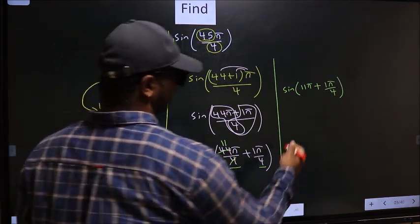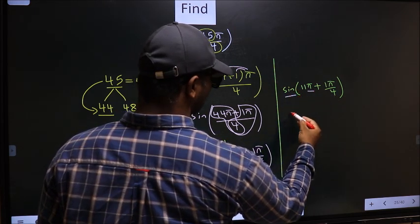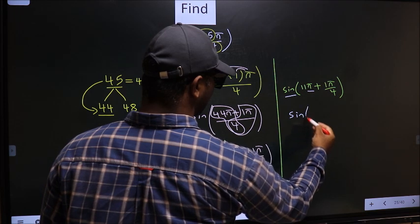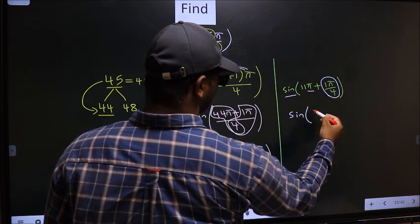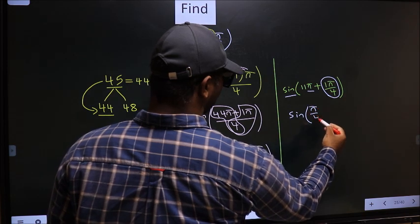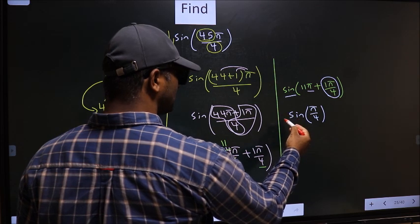Next, here we have π. So, sin is not going to change. It will remain sin. And inside, we get this angle: π/4. Now, the question is, will we get here plus or minus?